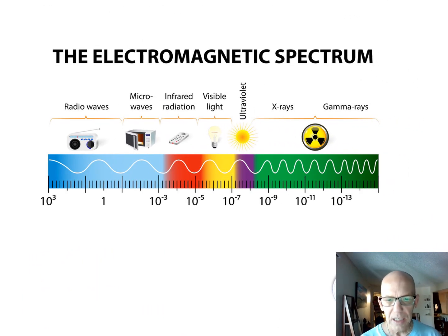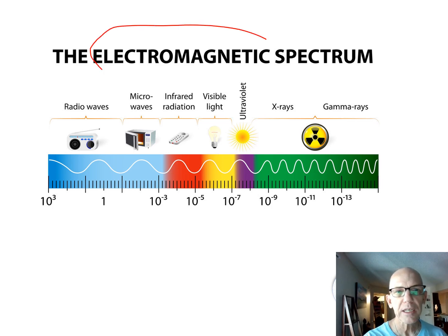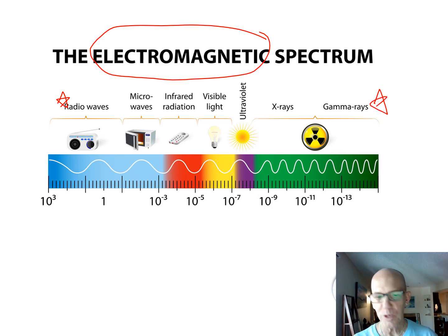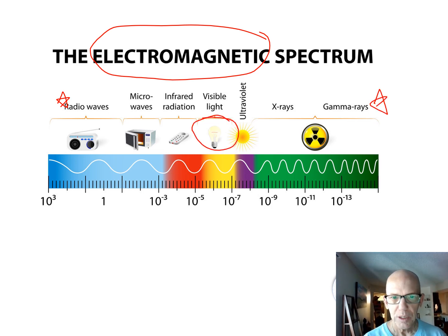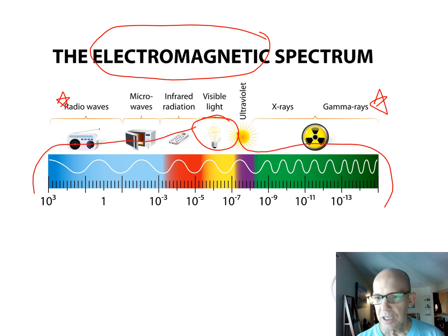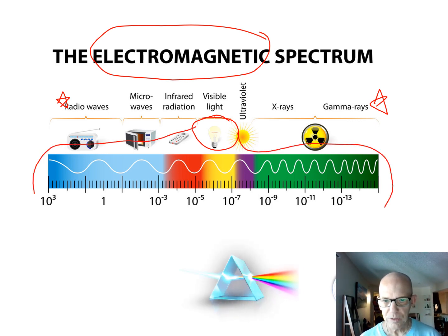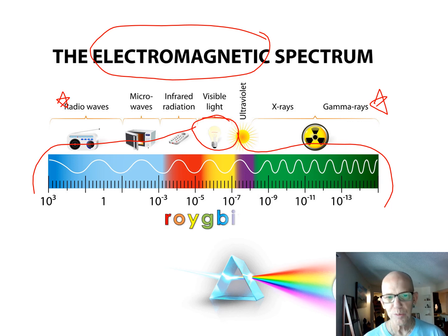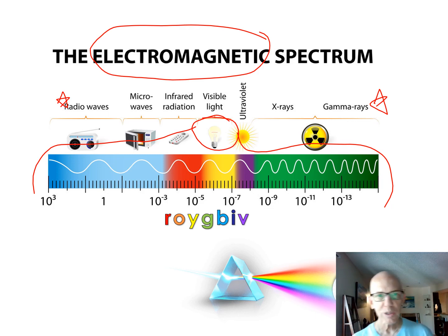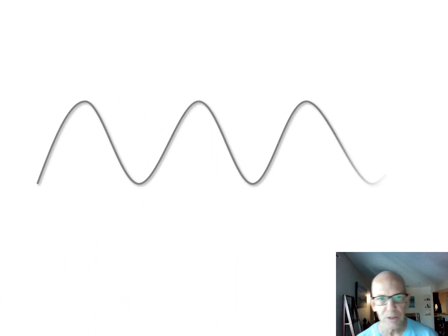Our eyes detect light, which is an electromagnetic wave. There are all kinds of waves, but our eyes don't detect radio waves or gamma rays — just a small visible spectrum. Within that range of frequencies, our eyes can detect the colors of the rainbow: ROYGBIV — red, orange, yellow, green, blue, indigo, and violet. Now let's talk about wave theory in more detail. A sine wave has two characteristics.